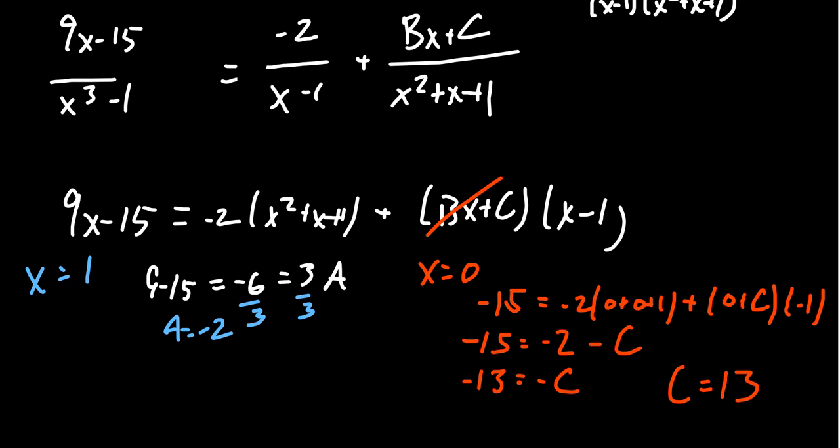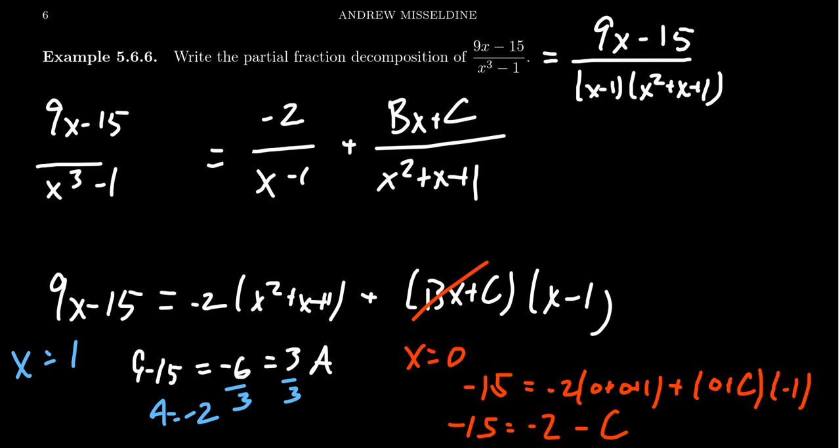We're then going to make that substitution above. Since C turned out to be 13, I'm going to erase that and plug in 13. So how do I figure out B at this moment?